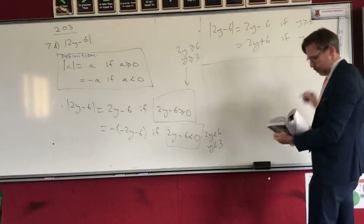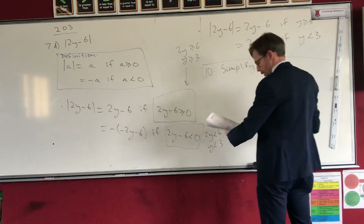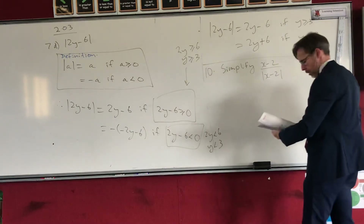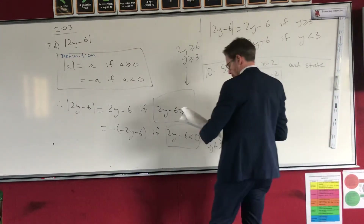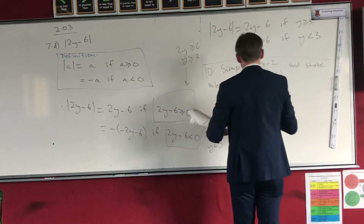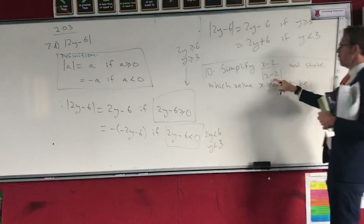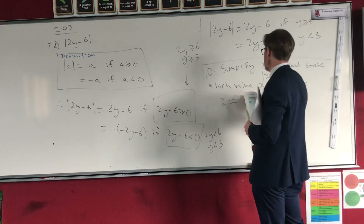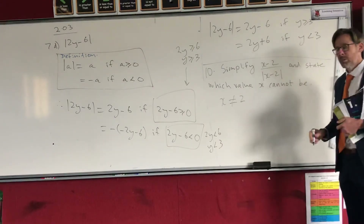The other request was for question 10. Simplify: x minus 2 over the modulus of x minus 2, and state which value x cannot be. Straight away, x cannot be 2 because you'll get a zero denominator — 2 minus 2 is 0, and any time you divide by 0 it's undefined.